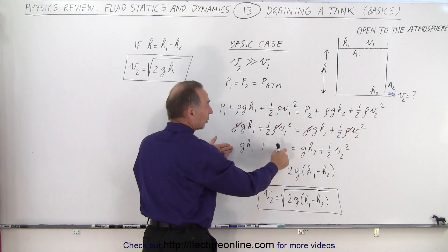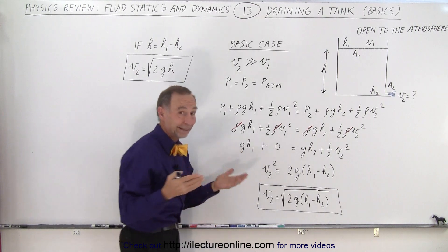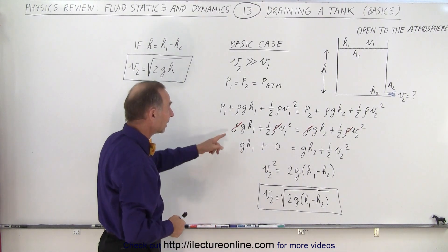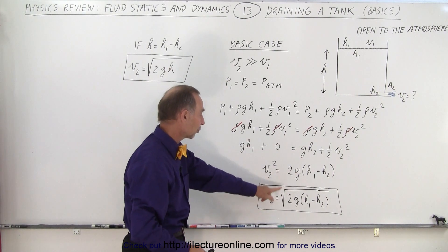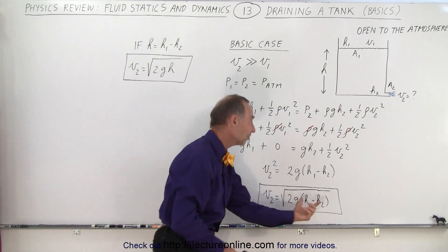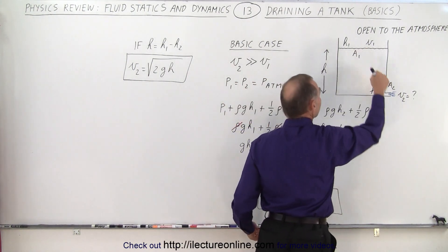Realizing that velocity one will be set equal to zero, for all intents and purposes it is zero. And then if we solve this for V2, notice we have V2 equals the square root of 2g times the difference in the height between the top and the bottom.